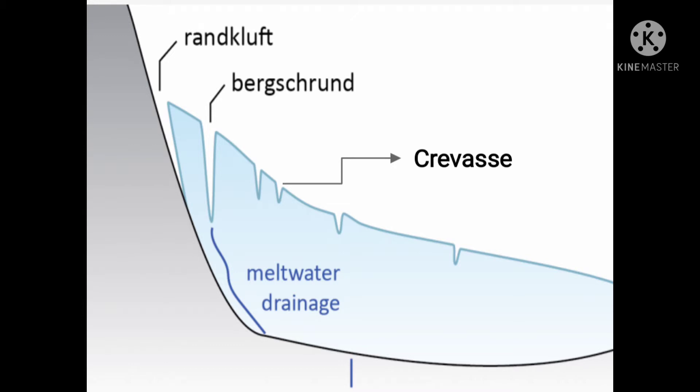Due to various reasons, some cracks or gaps are formed in the glacier or between the glacier and the mountains, which are extremely dangerous to mountaineers. Let's find out about some of the special cracks or gaps.